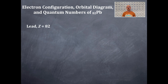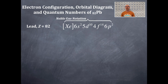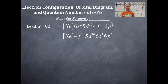There's Lead-82, that's Z of 82 — that is 82 protons and of course 82 electrons. Using noble gas notation, it's: [Xe] 6s2 5d10 4f14 6p2. Now, can you write that in order of filling? That is, interior shells first, then exterior shells. Here's a way to write it in order of filling: with the 4f14 first, then the 5d10, then the 6s2, and then the 6p2.